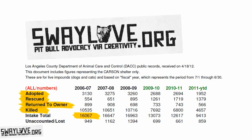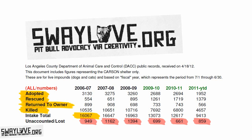The first thing I noticed — and hopefully the first thing you'd notice — is that if the intake total doesn't equal the other four totals combined (adopted, rescued, returned, and killed), then that means the shelter has lost or is unaccounted for a specific number of animals. As you can see on my document, hundreds of animals are going unaccounted for every single year. Are they being lost? Are they not being entered into the system correctly? Are they being killed off the books to fluff or lighten their kill numbers? I don't know — it could be any or none of those things — but the bottom line is they are not accounting for a specific number of animals.